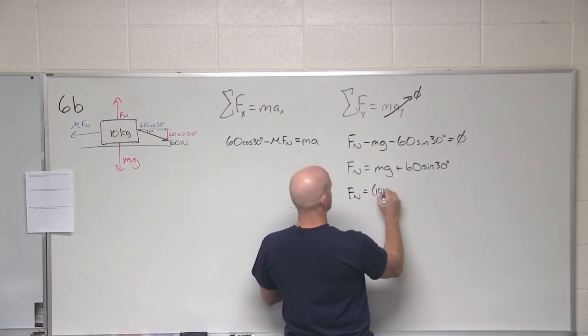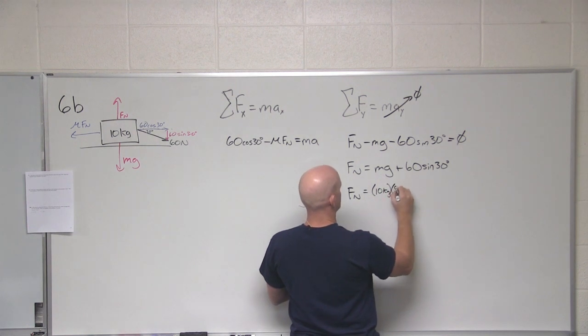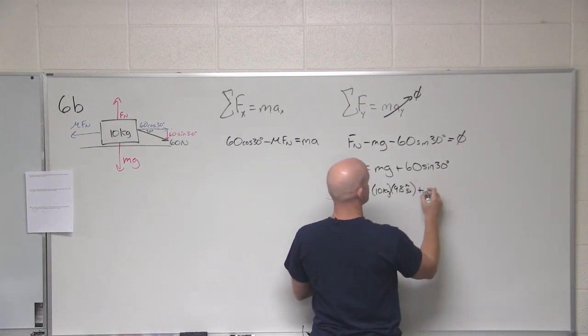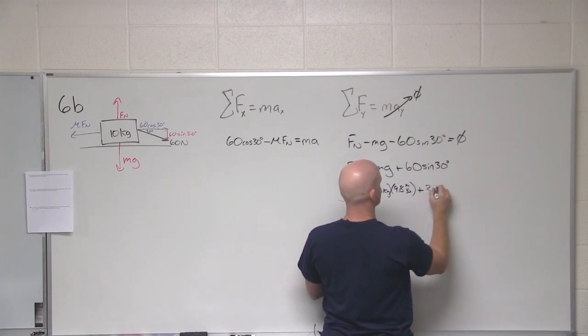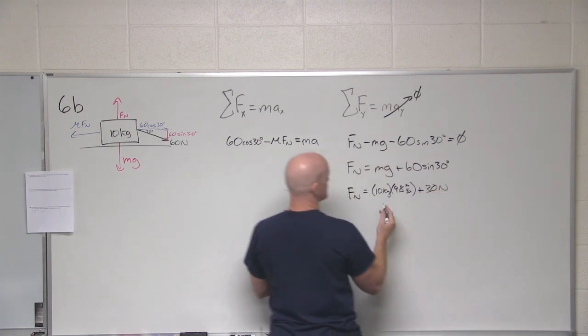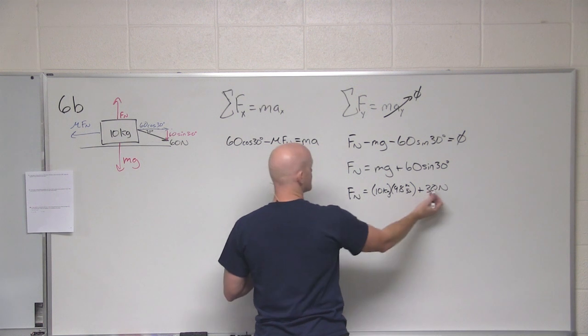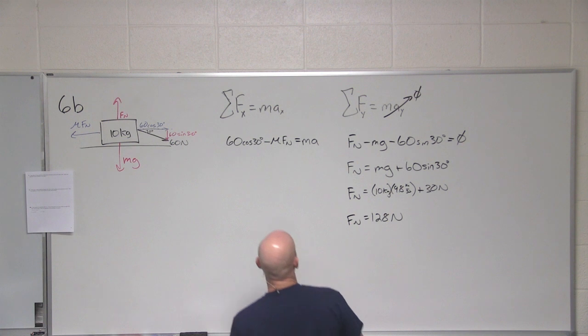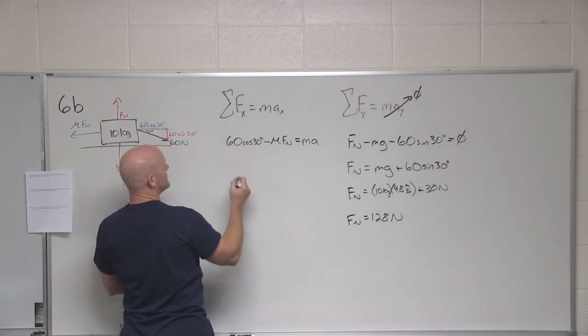Let's plug some numbers in here. 10 kilograms, 9.8 meters per second squared. 60 sine 30. Notice sine 30 is a half, so this is 30 newtons. 10 times 9.8 is 98, plus 30. And your normal force is 128 newtons. We'll plug that back in here.